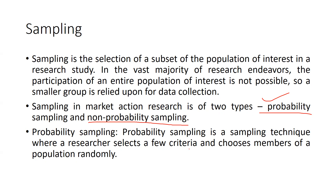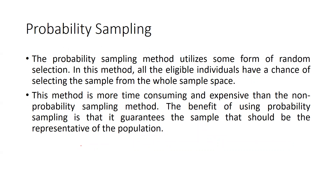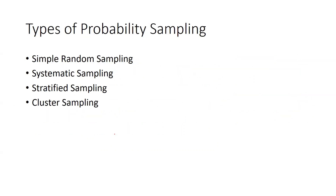Probability sampling is a technique where the researcher selects a few criteria and chooses members of a population randomly. This method utilizes some form of random selection, where all eligible individuals have a chance of being selected from the whole sample space. This method is more time consuming and expensive than non-probability sampling, but it guarantees the sample is representative of the population.